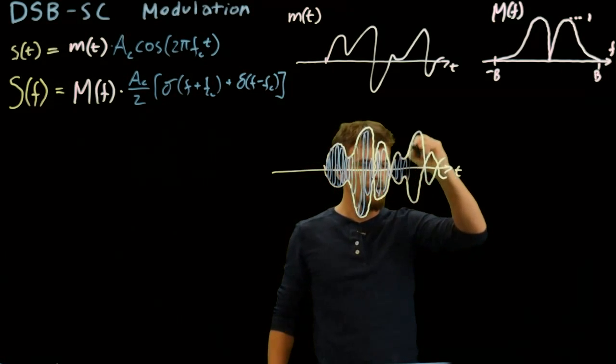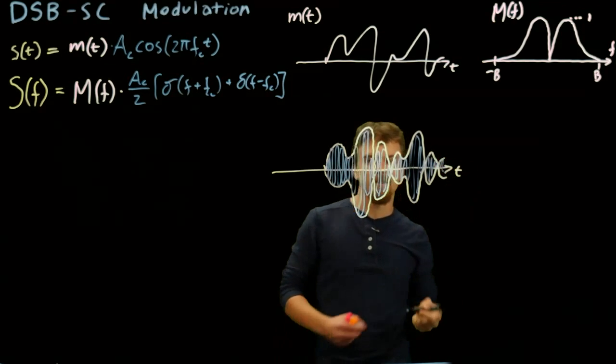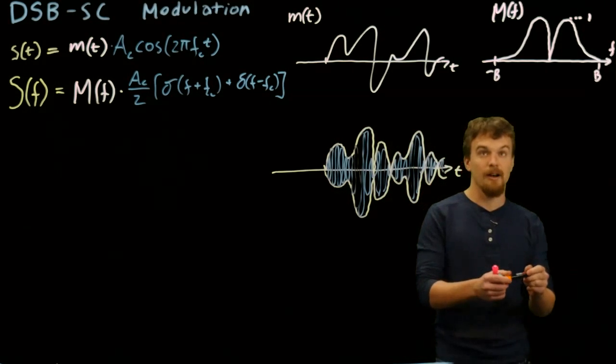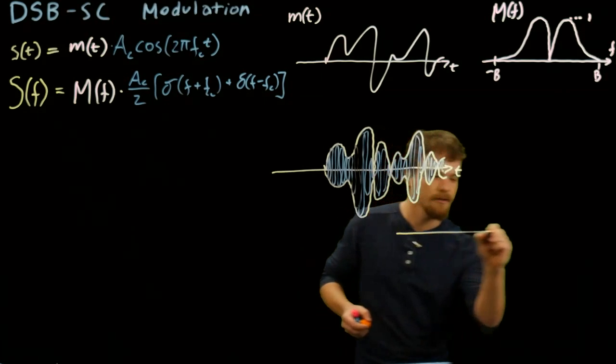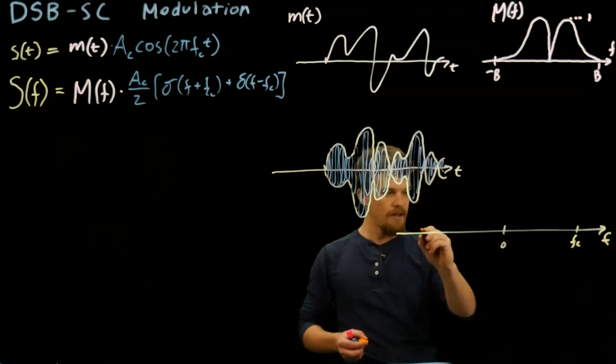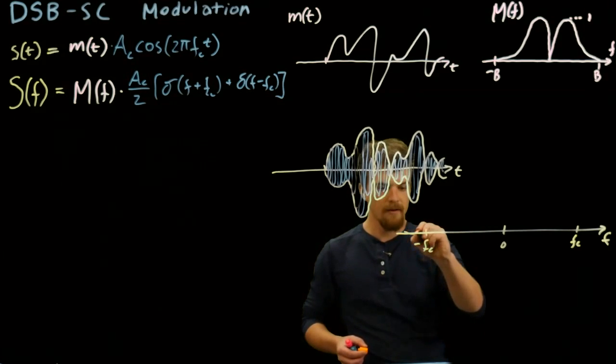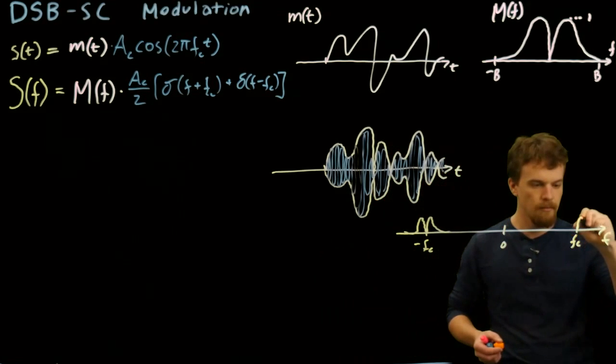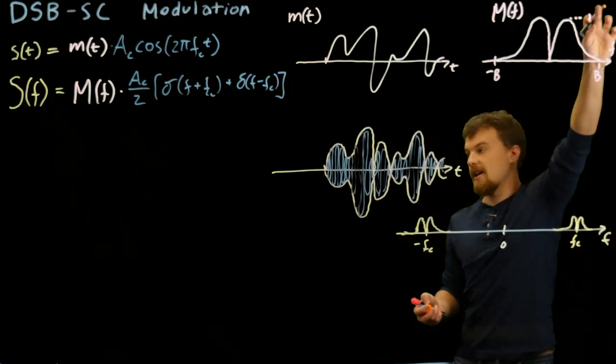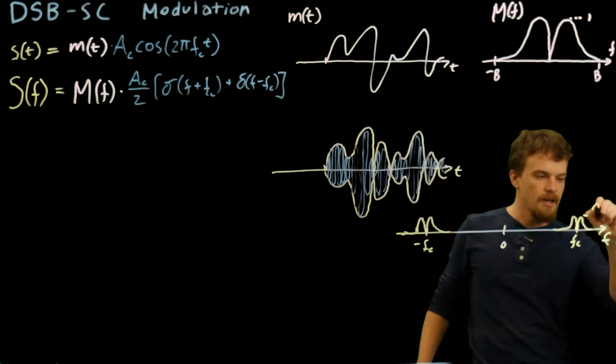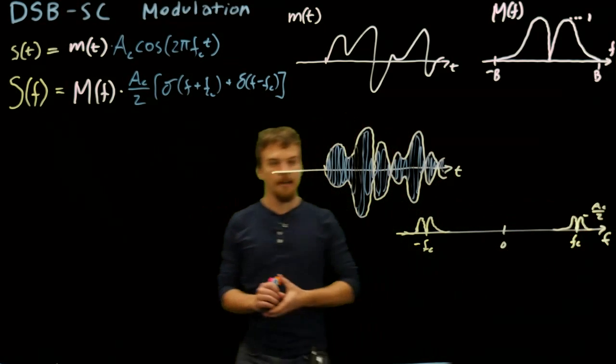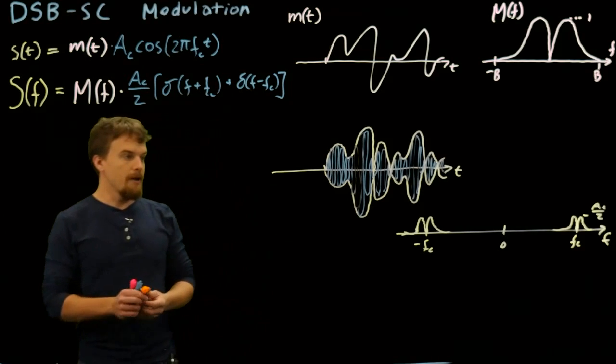Let's draw what it would look like in frequency. We'd have our zero point, and then out here at fc and negative fc we'd have copies of our spectrum. These would now have height Ac over 2. We're more trying to see what happens from side to side in the frequency domain. So now we have this and we send this out into the air.